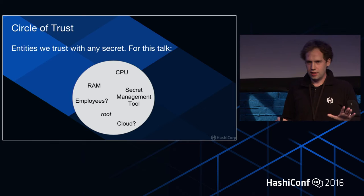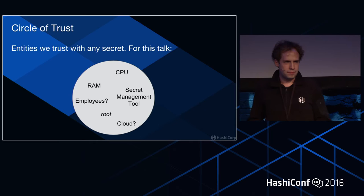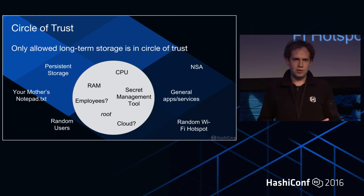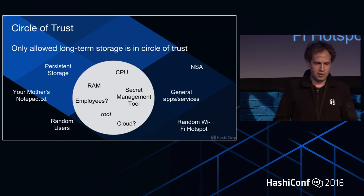For this talk, we're talking about CPU, RAM, your secret management tool, employees potentially. The NSA is probably outside your circle of trust. Your mother's notepad.txt where she stores her passwords — not in your circle of trust. The only allowed long-term storage is in your circle of trust. A secret should not live anywhere else outside of that.